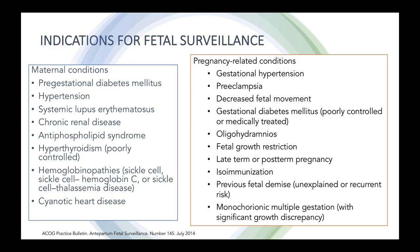Indications for fetal surveillance include the following. Maternal conditions include pre-gestational diabetes mellitus, hypertension, systemic lupus erythematosus, chronic renal disease, APAS, hyperthyroidism, hemoglobinopathies, and cyanotic heart disease, although there are other maternal conditions that may not be listed.